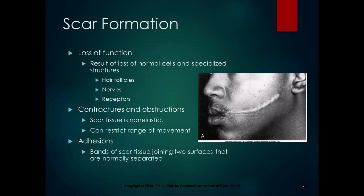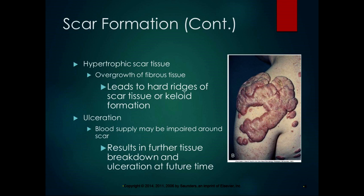Adhesions commonly occur after abdominal or other surgeries, joining things that are normally not joined and affecting function. Hypertrophic scar tissue is an overgrowth of fibrous tissue that leads to hard ridges of scar tissue or keloid formation. Keloid scars are shown in this picture. Some people are more prone to forming keloid scars due to individual body chemistry. I've been told — though I don't have a reference — that redheaded, fair-skinned people tend to form larger ridges of scar tissue.